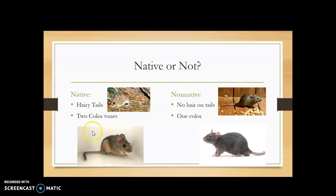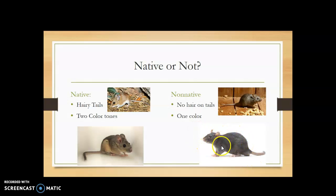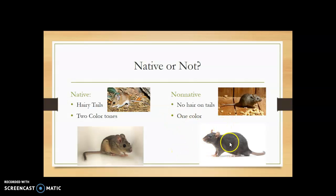Our native rodents all have hairy tails and two-color tones. Here we have a little deer mouse and over here our wood rat — nice cute big ears. Our non-natives are the house mouse, with a long hairless tail, and the Norwegian rat. When you think of a rat, you probably think of this guy, but we have a lot of native rats too and they're not all bad. Most of our disease problems are due to these non-natives. The Norwegian rat, Rattus norvegicus, was really responsible for the spread of the Black Plague, although all rodents can carry the fleas that carry plague.